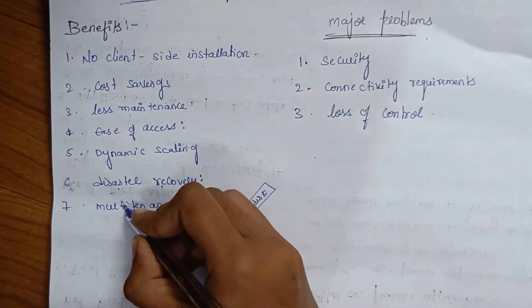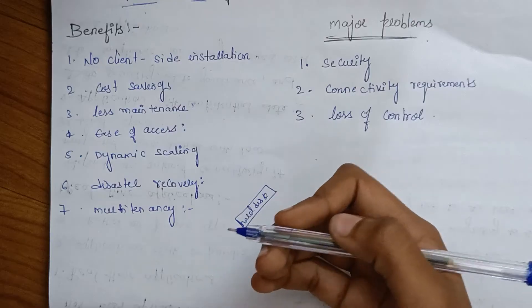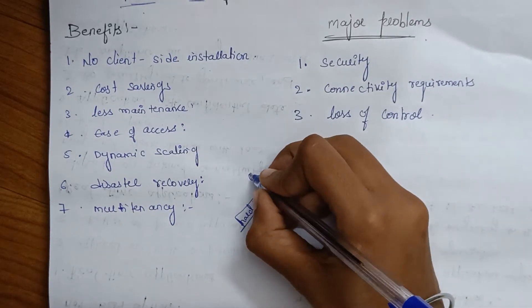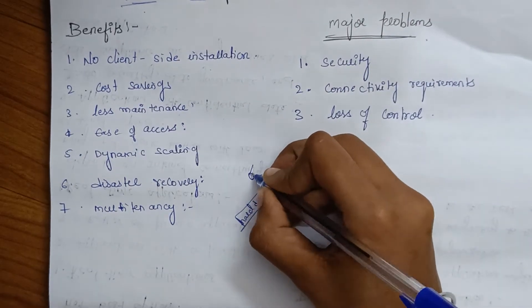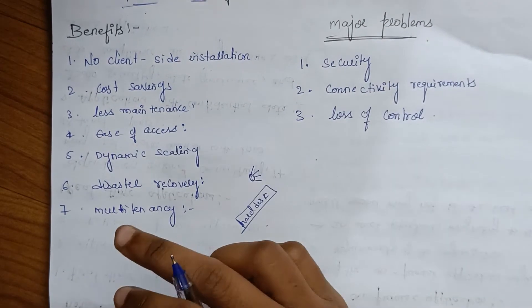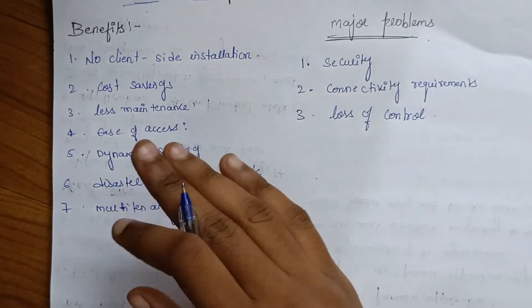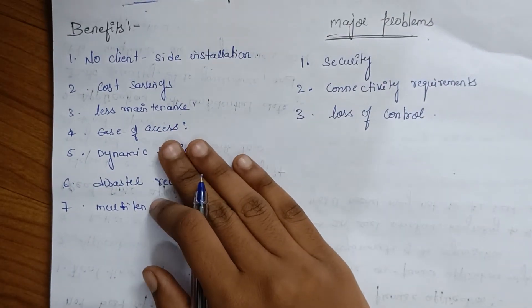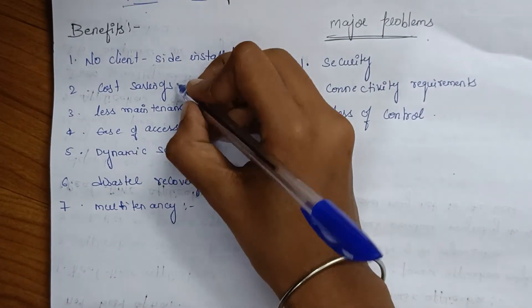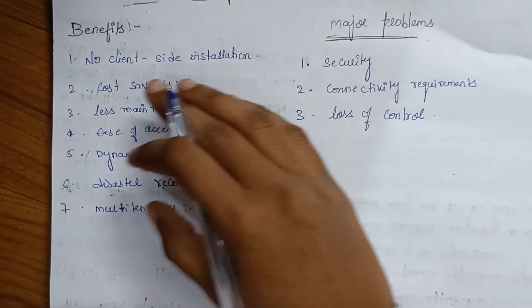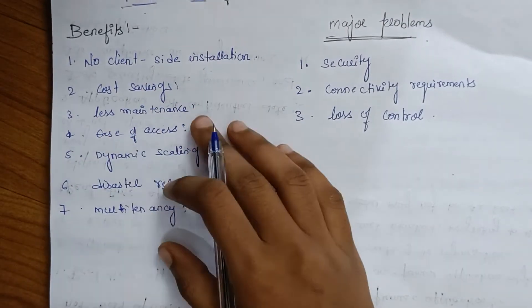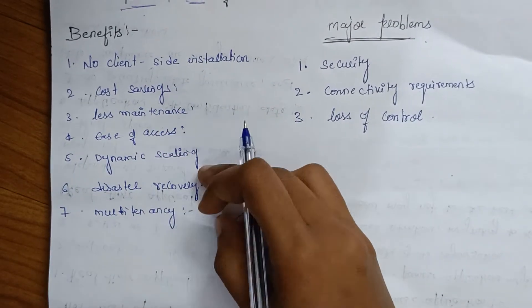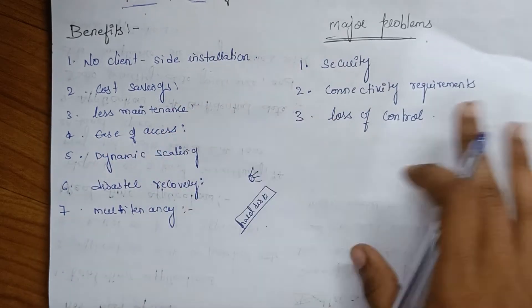Multi-tenancy means multiple users can use the system while only one instance is used. So these are the benefits. You can write with your own words, elaborate, and for 2 to 3 marks this much is enough.